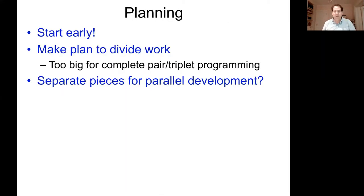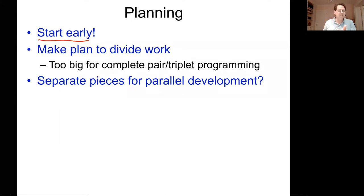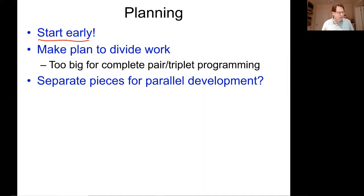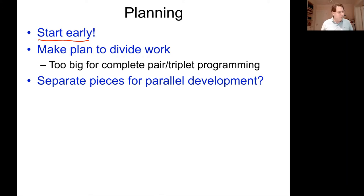You should plan this out carefully. This is partly an exercise in software development but also in how you organize a team. Start early — there's a piece that is the algorithm, and if you can't get it working at all, large parts of the project won't work. Make a plan to divide up the work. Milestones two and three are usually the most work, and they're too big to complete with just pair or triplet programming, so you want parallel development.